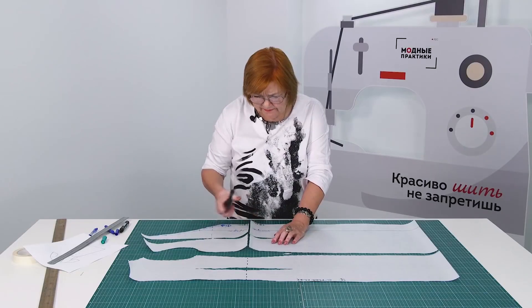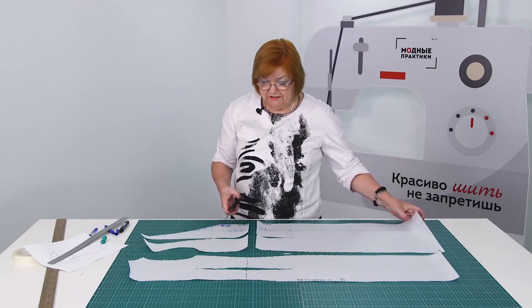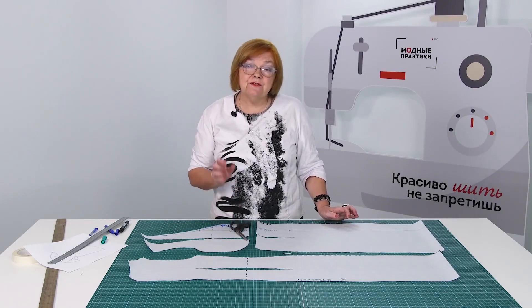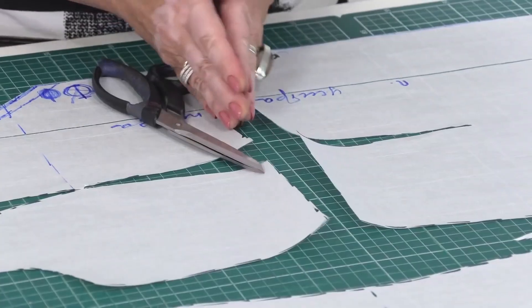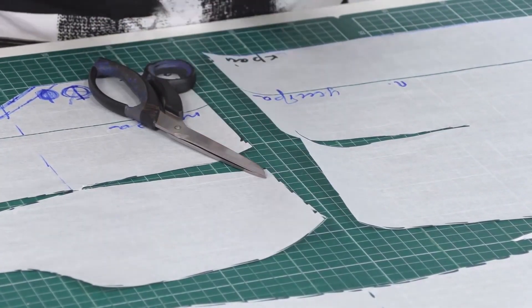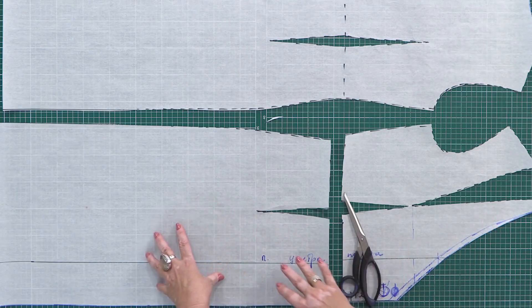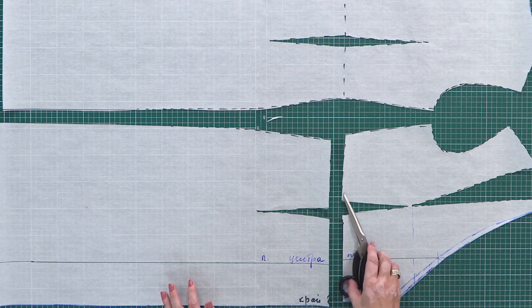First, we need to cut it on the waistline. Do not forget to sign all the needed details. I know for sure that the pattern is accurate. This is why I can cut the waistline right away.